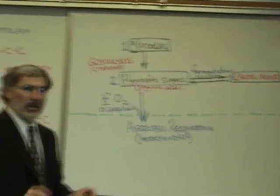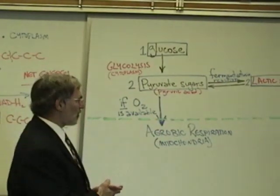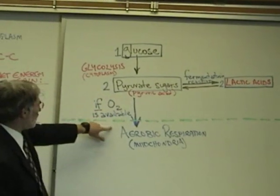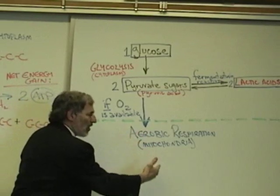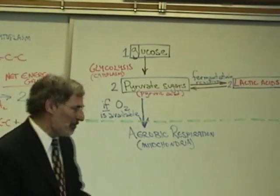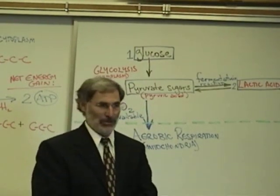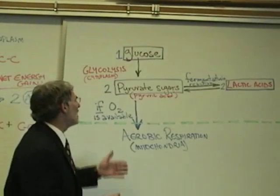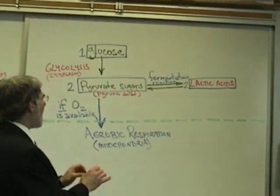At the end of glycolysis, where one glucose molecule has been split apart forming two pyruvate sugars or pyruvic acid, if oxygen is available, the pyruvate sugars will enter the mitochondria of the cell and will be broken apart in a process called aerobic respiration — called aerobic because it only occurs if oxygen is available. In aerobic respiration, those two pyruvate sugars will be totally broken apart into carbon dioxide molecules.